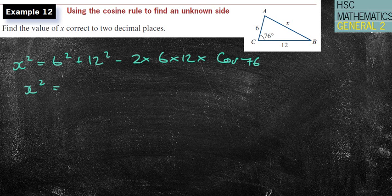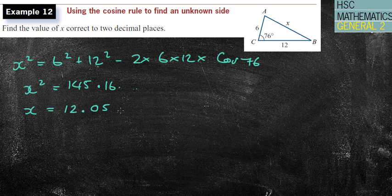And I'll get 145.16... I'm now going to press my square root button, answer, and I get to two decimal places 12.05 and it's no units, so I'm going to put units on there. Okay, nice and easy. Alright.